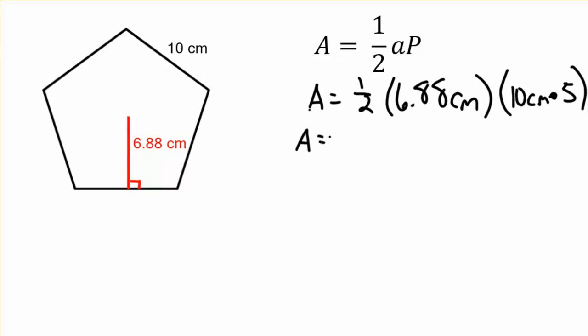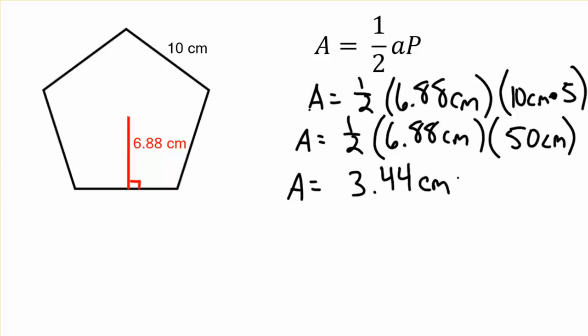And I'm going to go ahead and rewrite one-half of the 6.88 centimeters. Our perimeter is going to be 5 times 10, which is 50 centimeters. Now here, instead of multiplying those out, I'm going to go ahead and cut the first number in half. Everything's multiplication here, so the order really doesn't matter. One-half of 6.88 is 3.44, still centimeters.